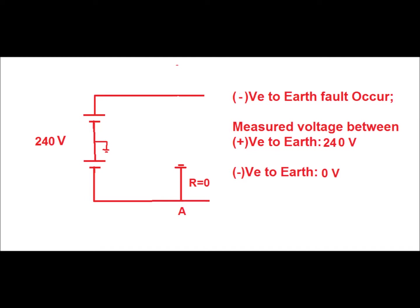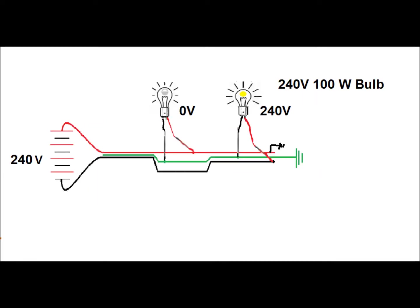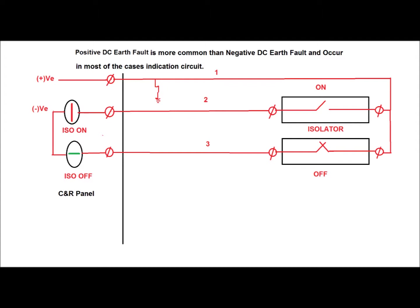Similarly, if it is a negative to solid earth fault, then negative to earth becomes 0 volt and the positive to earth volt will be 240 volt. Now during a condition where a positive to solid earth fault occurs, if you connect a 240 volt 100 watt bulb between negative to earth, it will glow to full extent as shown in this diagram. If it is a resistive earth fault, the glow will be a little lower.